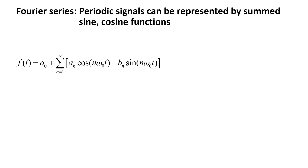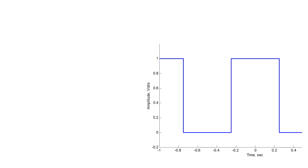A Fourier series allows you to express any periodic function as the sum of an infinite number of sinusoids. An example is this square wave.